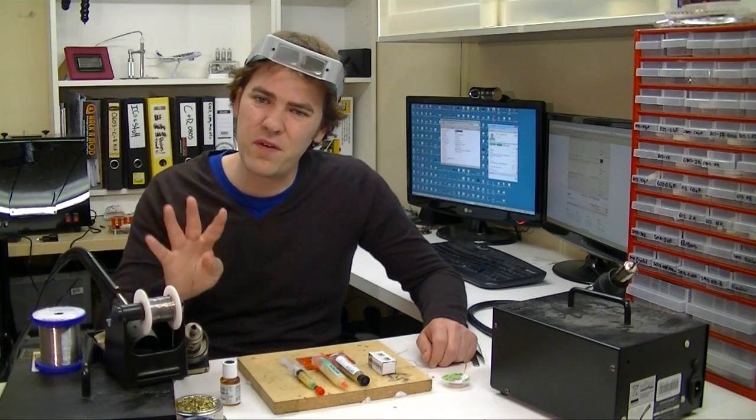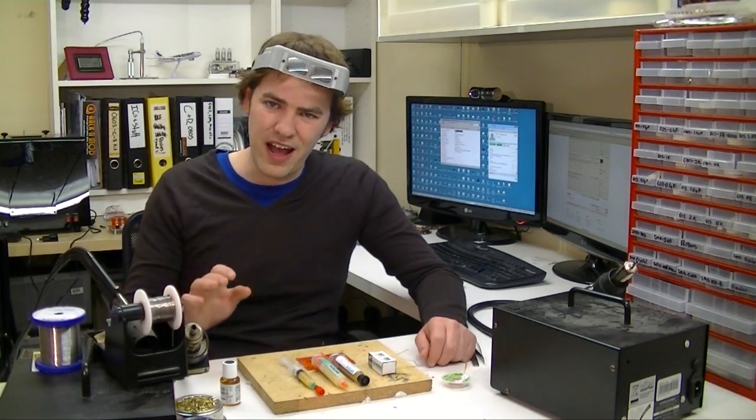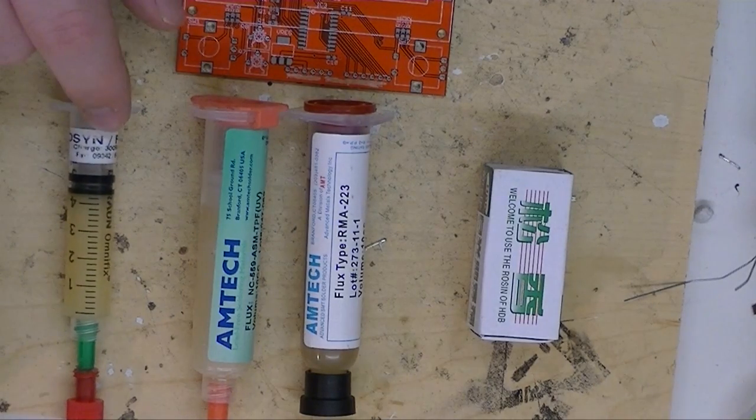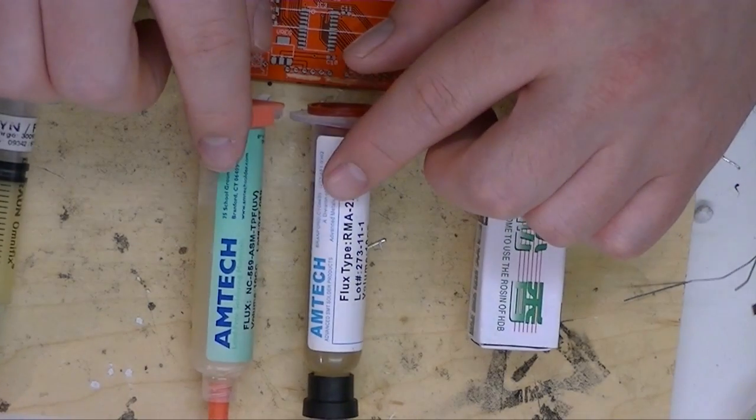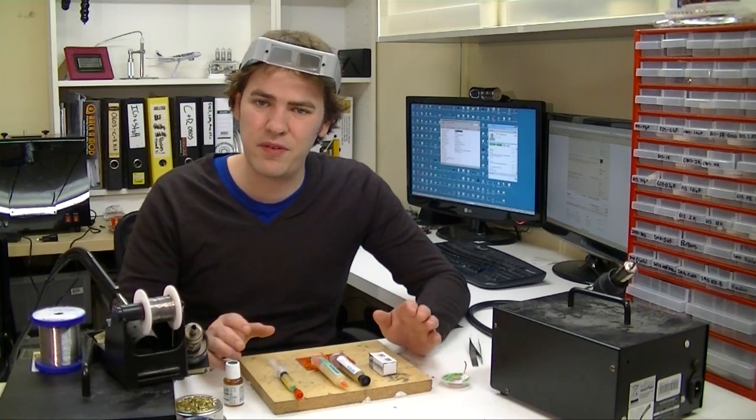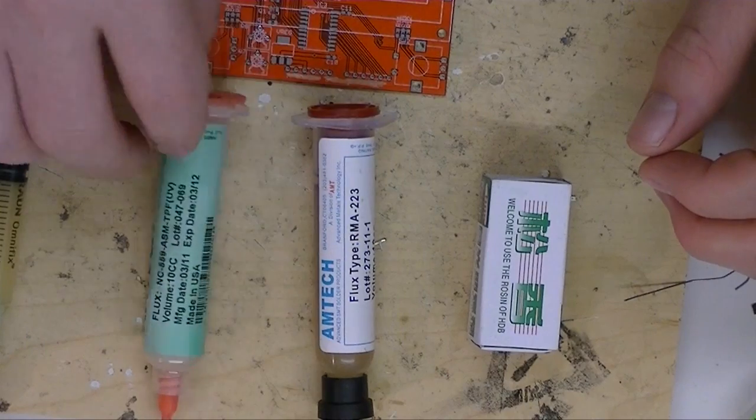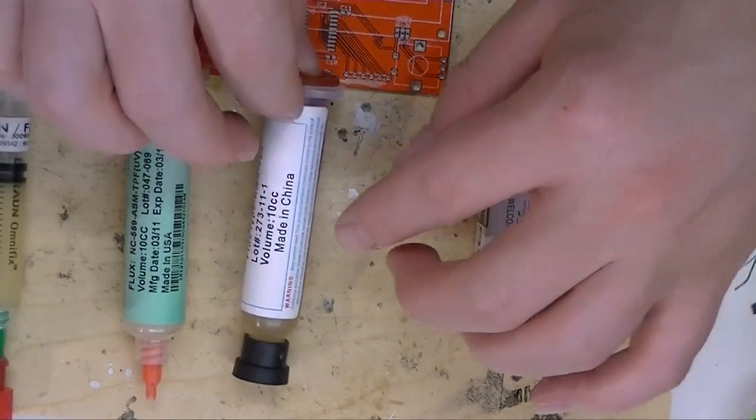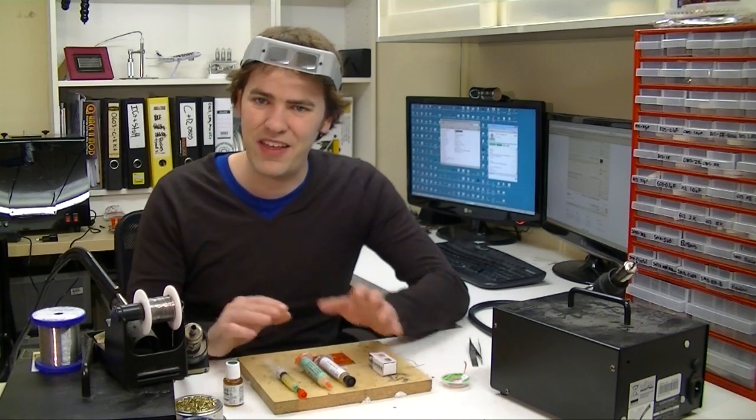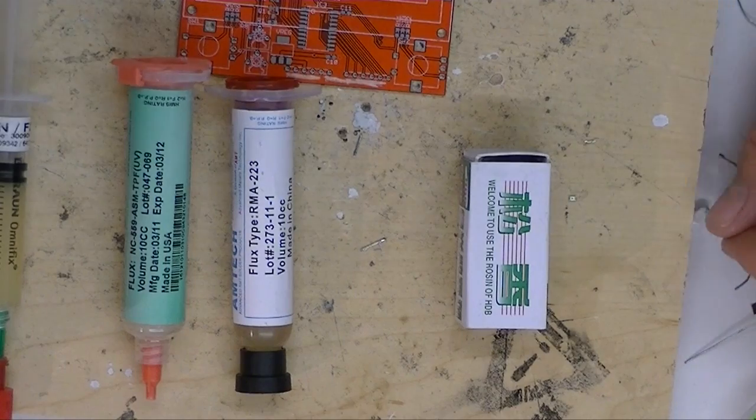This is going to be a four-way flux off. We're going to start out by using our regular Edson flux. This is probably the flux we most commonly use in the workshop, it's good for everything. Then next up we have two tubes of Amtech flux. These both came from the markets in China. One says made in the USA on it, and the other says made in China. We're going to test them both out and see how they compare to the Edson flux.